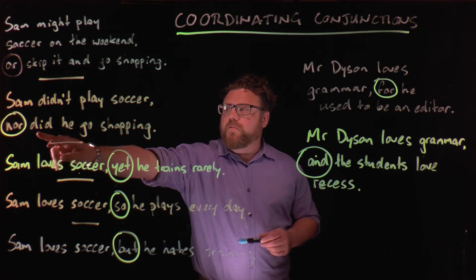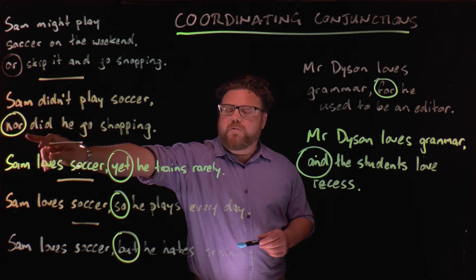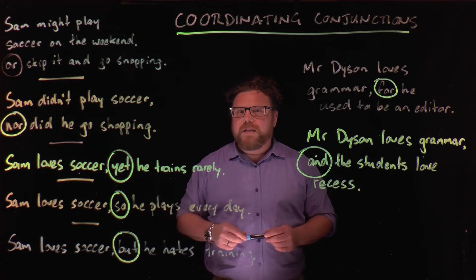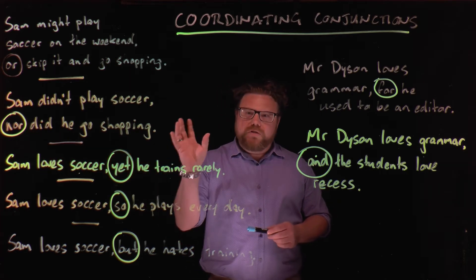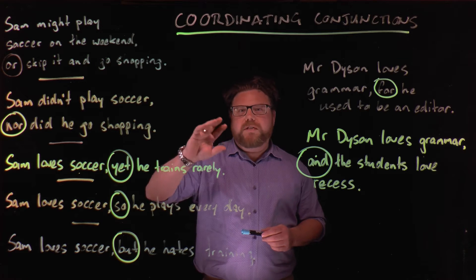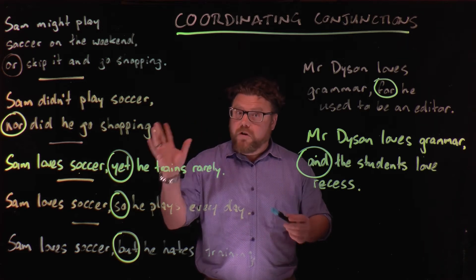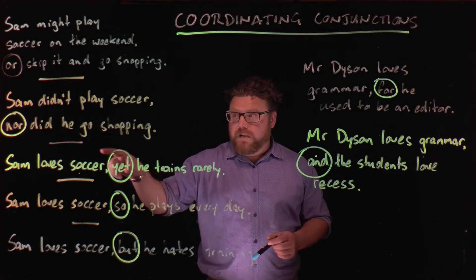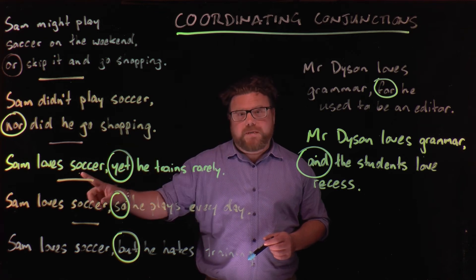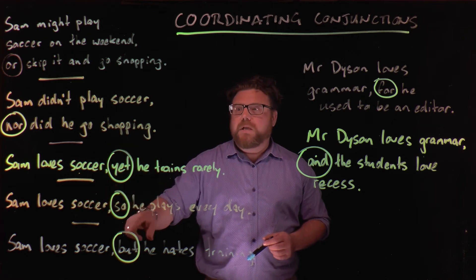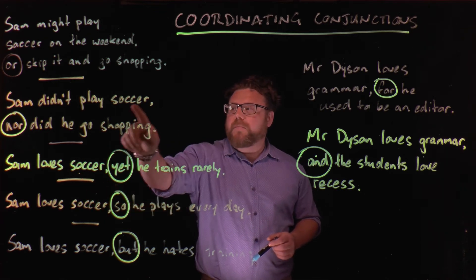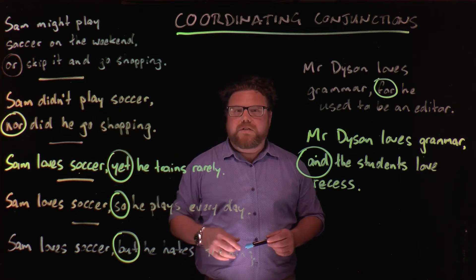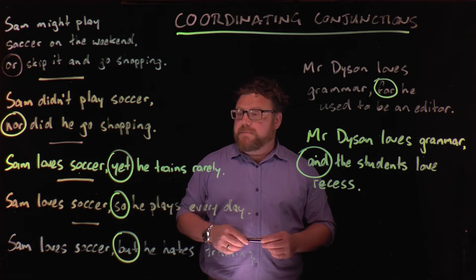The second type of coordinating conjunction does the opposite: 'nor.' It shows us two alternative actions that our subject might not do. For example: Sam didn't play soccer, nor did he go shopping. Again, a comma and coordinating conjunction to link two independent clauses.